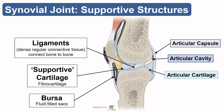All synovial joints have an articular capsule — shown here in this image — and we can see where it's replaced by a tendon, the patellar tendon in the knee. This capsule surrounds the joint cavity or articular cavity, and then articular cartilage covers over those surfaces of bone.